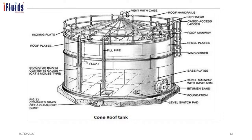The cone roof tank diagram shows its parts: vent with gauge, flame arrester, roof plates, cage, access ladder, manway, fill pipe, level gauge, and bottom manway and drain. This is an older arrangement — nowadays radar-type level measurement and automated facilities are used. The cone roof tank is a fixed roof tank.